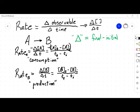In the case of a rate of production, this difference should be positive, so we don't need the negative sign to make our overall rate positive. When we're talking about rates of chemical reactions, this is what we're really talking about.